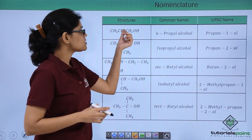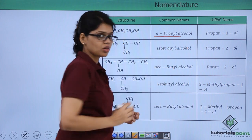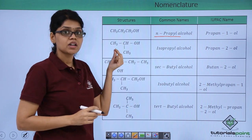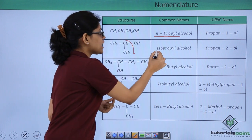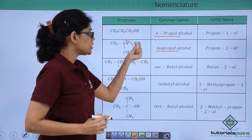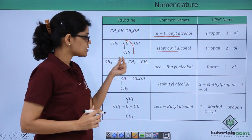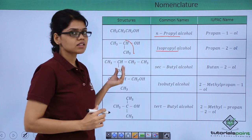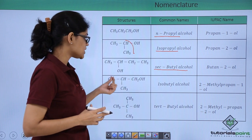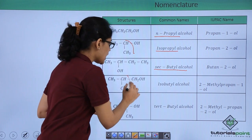For example, CH3CH2CH2OH is nothing but n-propyl alcohol, and CH3CHOHCH3 becomes isopropyl alcohol, which is propan-2-ol because OH is on the second carbon. CH3CH2CH2CH2OH corresponds to the common name n-butyl alcohol.